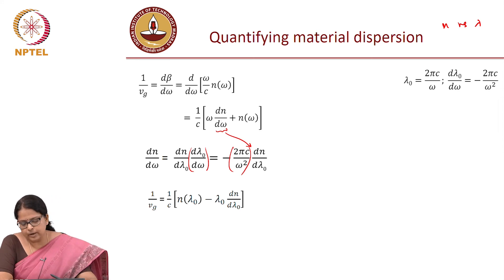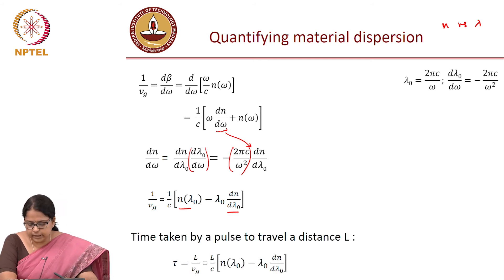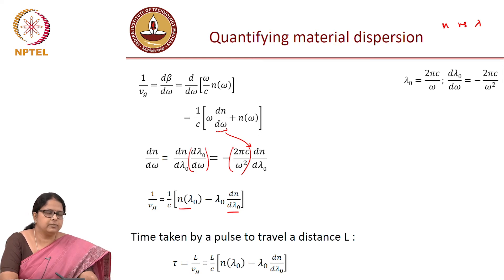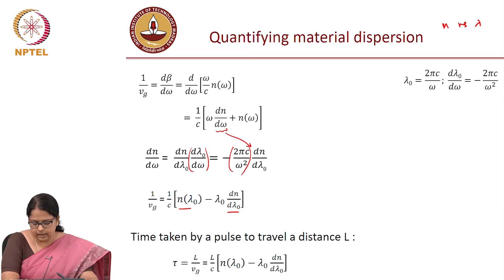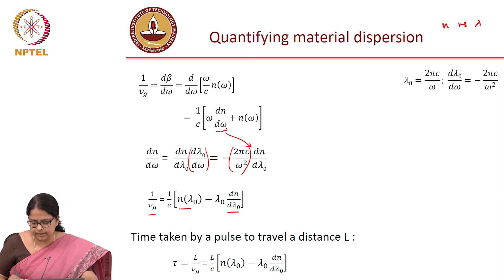So the group velocity now depends not just on n but also on dn/d lambda. The time taken by a pulse to travel a distance L is tau = L/Vg = L · (d beta/d omega) = (L/c)(n(lambda) − lambda · dn/d lambda). This gives us the time taken for a pulse to travel the distance.